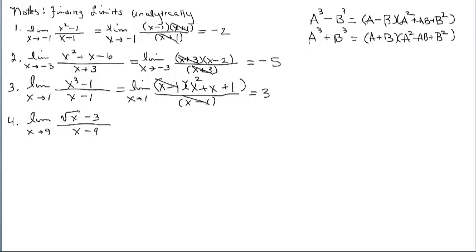For the next problem, note that the square root just goes over the x. Try a direct substitution: the square root of 9 is 3, 3 minus 3 is 0, and the denominator also gives 0, so we get 0 over 0. We're going to have to do something here.